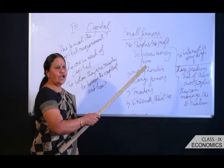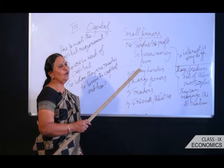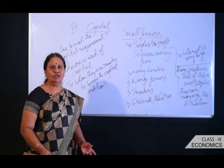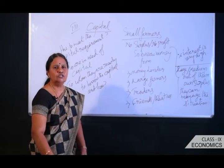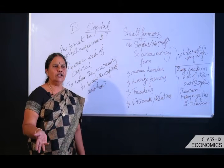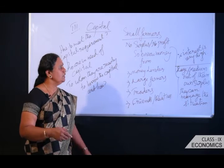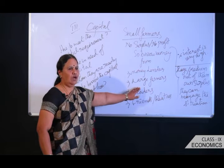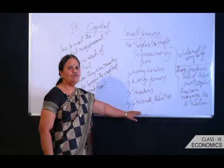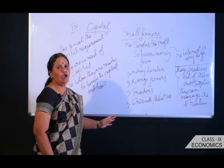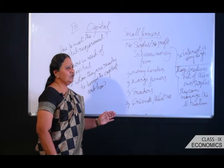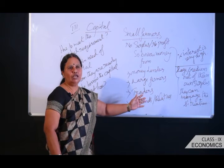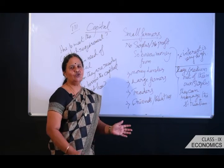Small farmers are ready to borrow money from: number one, moneylenders who lend at a rate of interest; number two, large farmers; number three, traders; and number four, friends or relatives. The most important adverse situation is that the rate of interest is very high, making it very difficult for them to repay the loan. In your book there is a case study regarding Savita, who has one hectare of land and is in bare need of working capital to buy seeds and fertilizer.